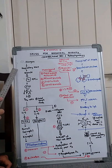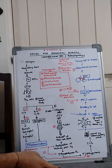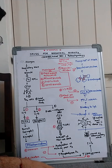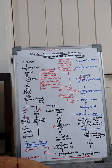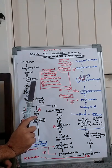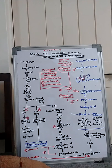In the respiratory tract, there are macrophages present. They are basically antigen-presenting cells, abbreviated as APCs. First of all, the allergen is ingested by the macrophages — they take up the allergen by phagocytosis.